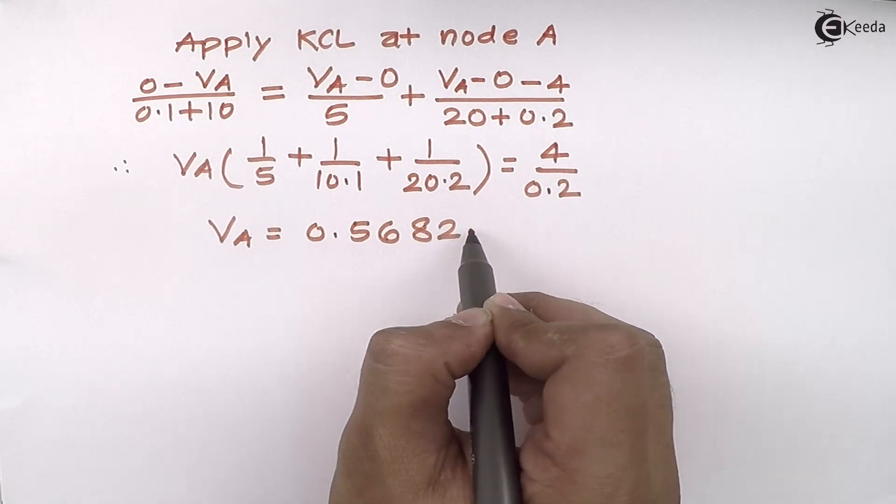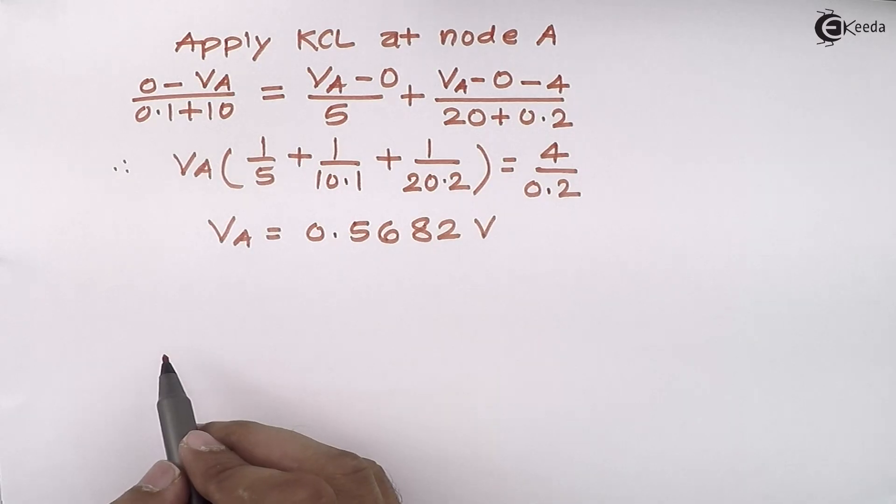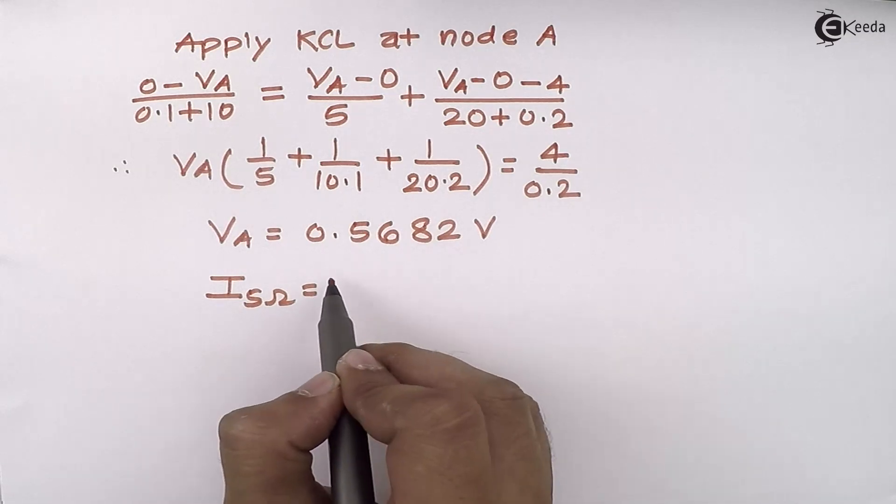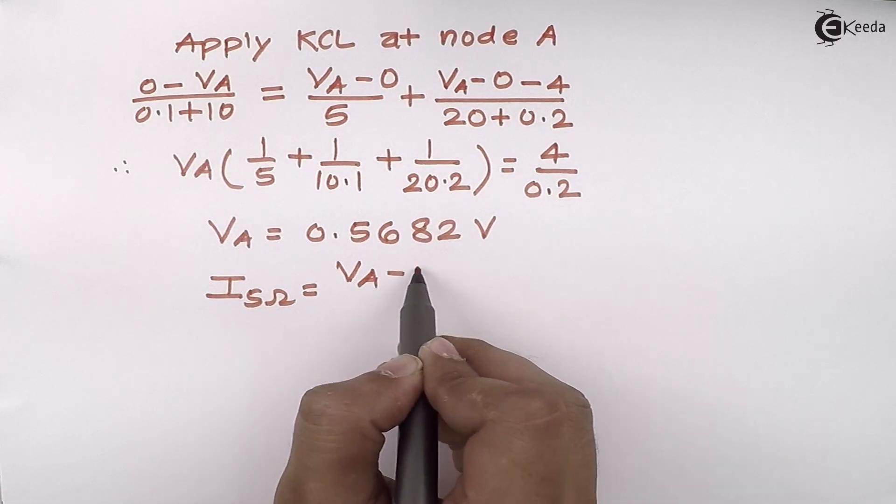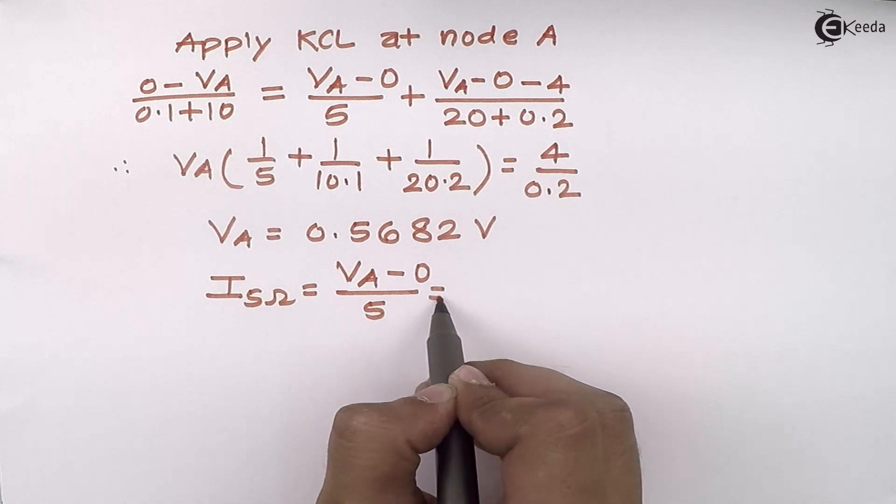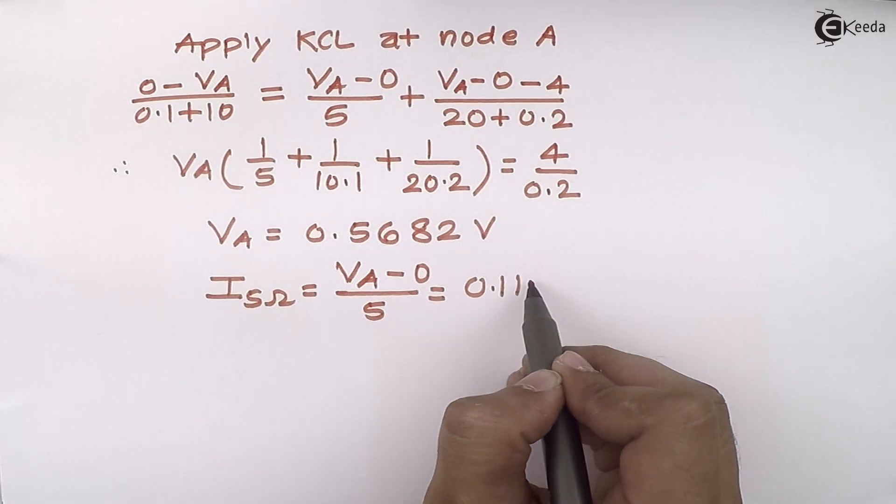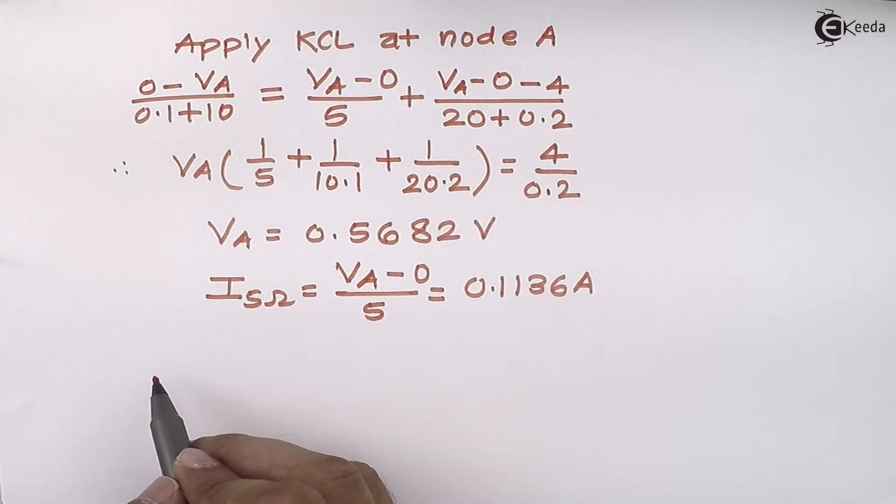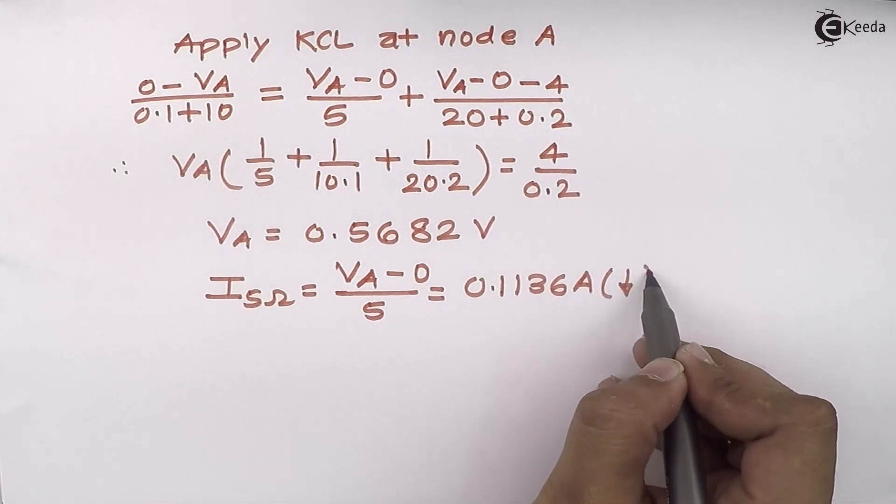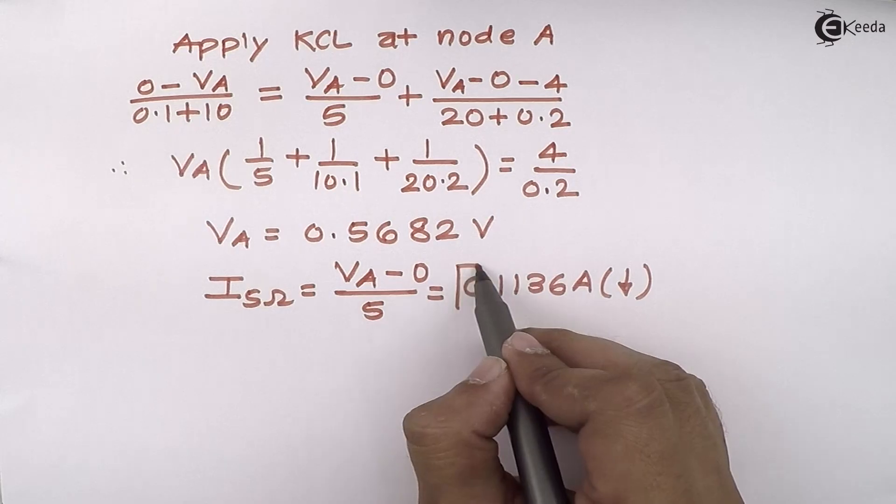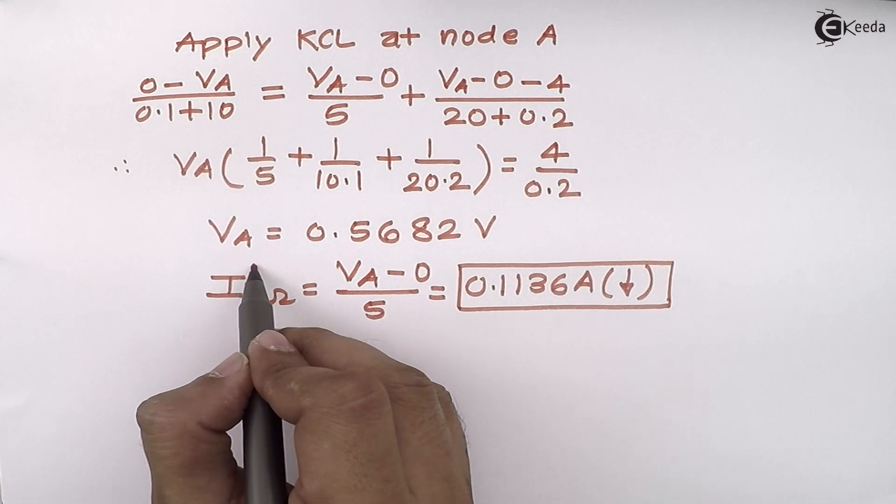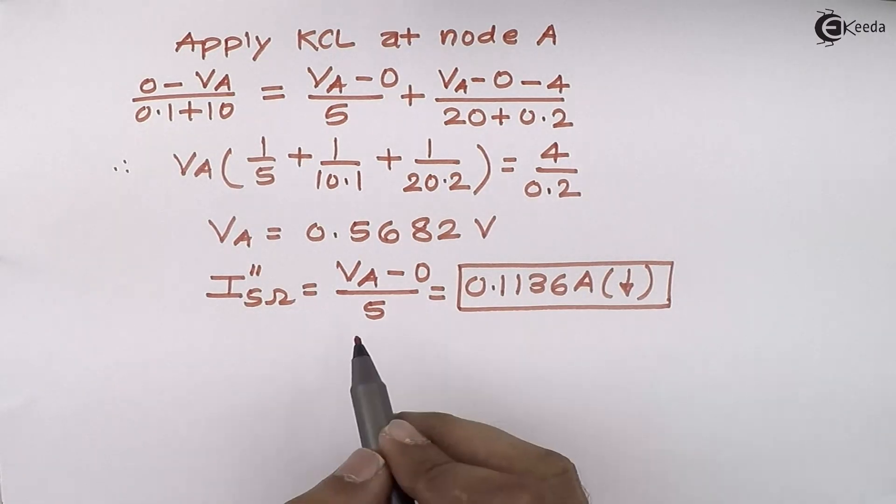We are supposed to find out current flowing through 5 ohm. So for 5 ohm, the equation is (VA - 0) divided by 5. I will get the answer 0.1136 amperes. Again a positive answer, so whatever direction we have assumed is correct. We have assumed the downward direction. This is the remaining half of the problem because this is the current I am getting because of 4 volt acting alone.